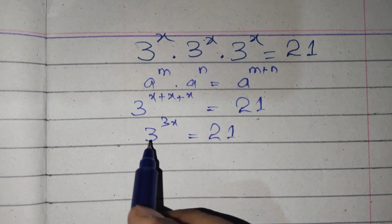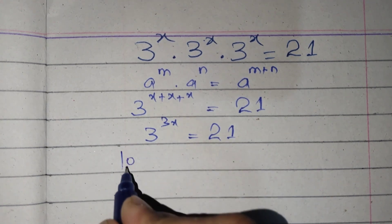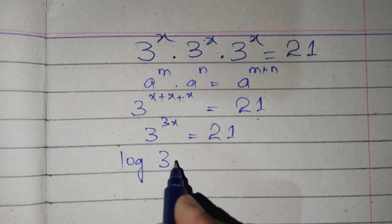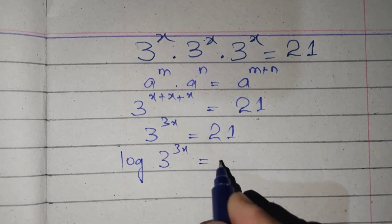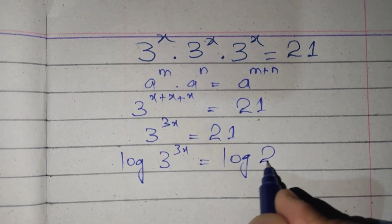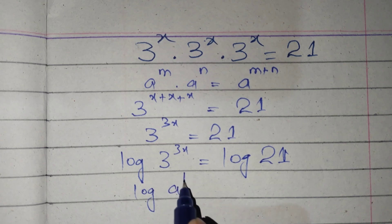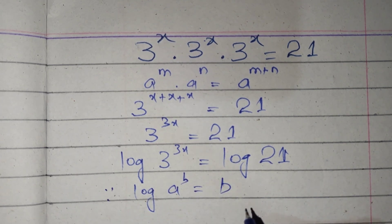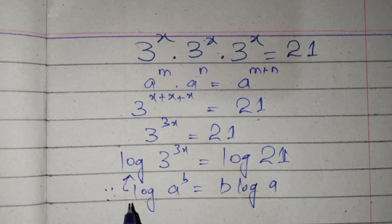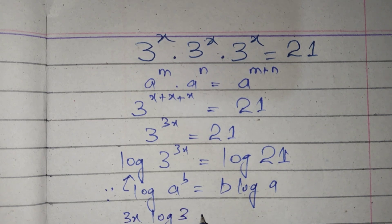Now we will take log on both sides, so it becomes log of 3 raised to the power 3x equals log of 21. The formula here is log of a raised to the power b equals b times log of a, so on the left side it becomes 3x log of 3 equals log of 21.